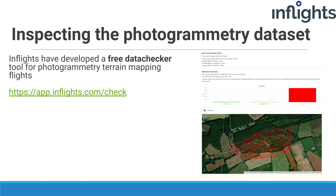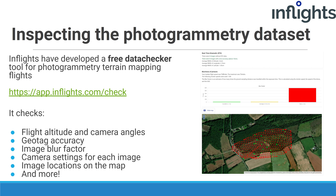Inflights has developed a free data checker tool for photogrammetry terrain mapping flights. Go to app.inflights.com/check in your web browser. The data checker checks camera name, flight altitude and camera angles, time and duration of the flight, geotag accuracy, motion blur, camera settings for each image, image location on the map, area of interest coverage, and more.